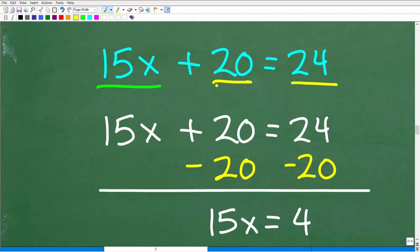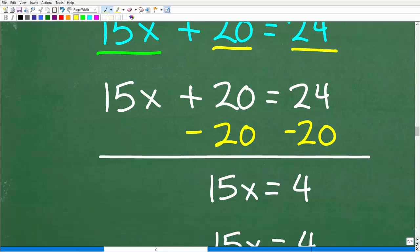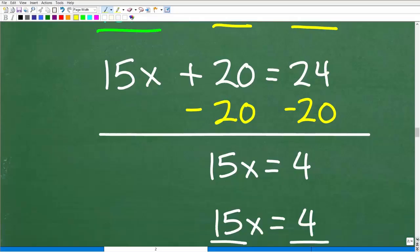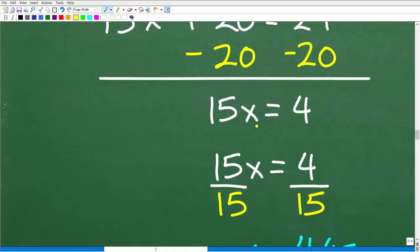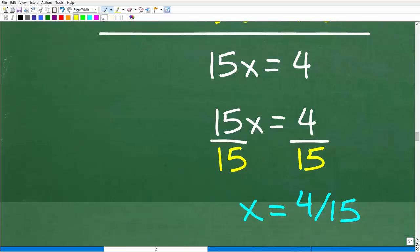Now, we can go real fast. We're like, now I just need to subtract 20 from both sides of the equation. No big deal. So this is going to give me 15x is equal to 24 minus 20, which is 4. And of course, the last step is to divide both sides of the equation by 15, which gives us the answer x is equal to 4 over 15.